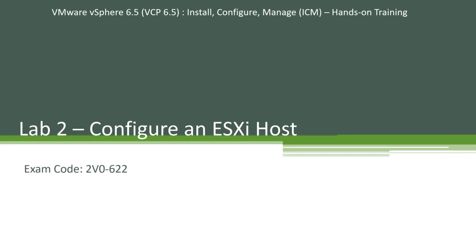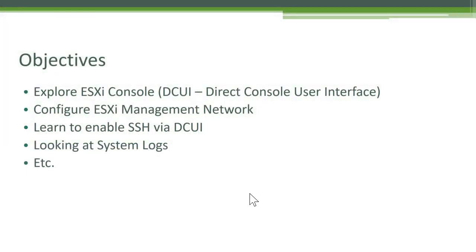Welcome back to our VCP 6.5 ICM hands-on series. This is Lab 2 in the series. In this lab we will configure the ESXi host that we installed in the previous lab. In the previous lab we configured our UCS and installed ESXi, but we have not done any configuration on that ESXi host — no IP address or any other changes. Here are the high-level objectives we'll go through.